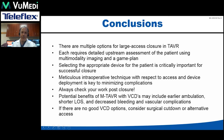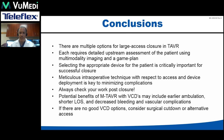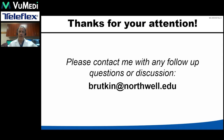In conclusion, there are multiple options for large access closure in TAVR. Each requires detailed upstream assessment of the patient using multi-modality imaging and a solid game plan and bailout plan — we do that in our pre-case meeting for every single patient. Selecting the appropriate device for the patient is critically important for successful closure. Meticulous intraoperative technique with respect to access and device deployment is key to minimizing complications. Always check your work post-closure — we never leave the room without ensuring our closure is successful and flow is intact and brisk. Potential benefits of minimally invasive TAVR with vascular closure devices may include earlier ambulation, shorter length of stay, and decreased bleeding and vascular complications. If there are no good vascular closure device options, consider surgical cutdown or alternative access. Thanks so much for your attention.